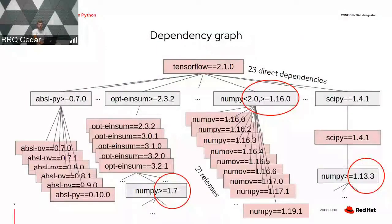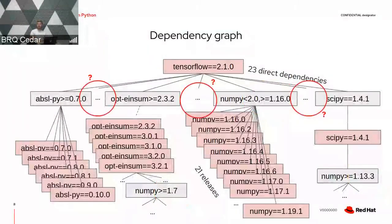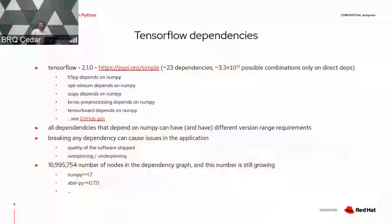Also, this depends on time — when you install or resolve dependencies determines which versions of NumPy can end up in your software. If we check TensorFlow 2.1.0 as a whole, we can see NumPy is a dependency of H5py, opt-einsum, SciPy, Keras preprocessing, TensorBoard, and possibly others.